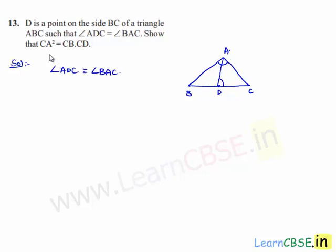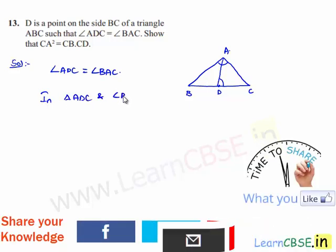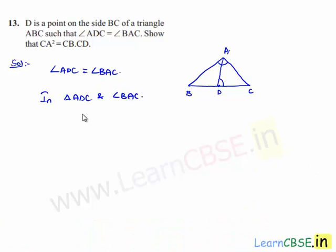We need to prove that CA squared is equal to CB into CD. In order to prove this, let us consider triangle ADC and triangle BAC. In these triangles, angle ADC is equal to angle BAC since it is given, and angle ACD is equal to angle ACB since it is a common angle for both triangles.